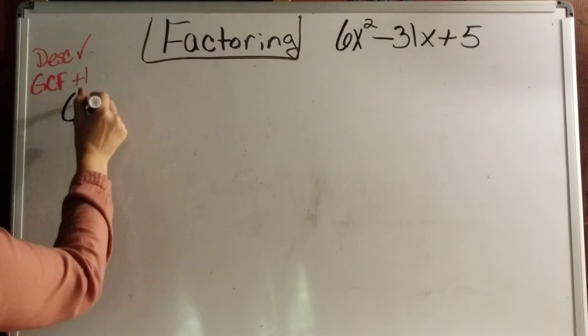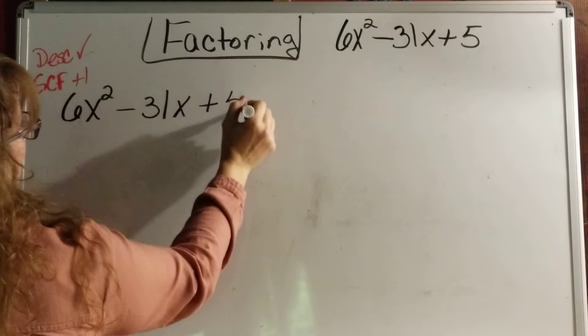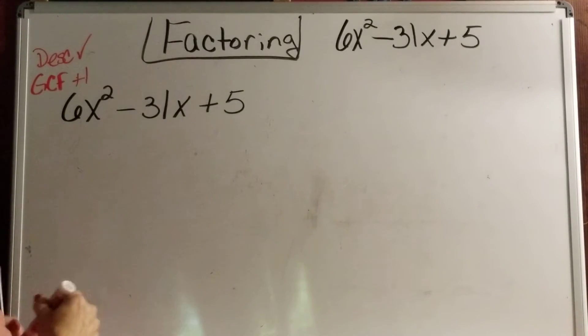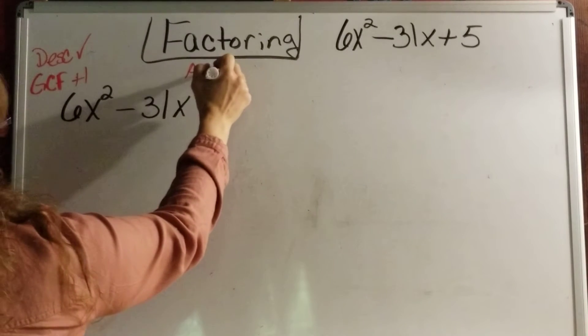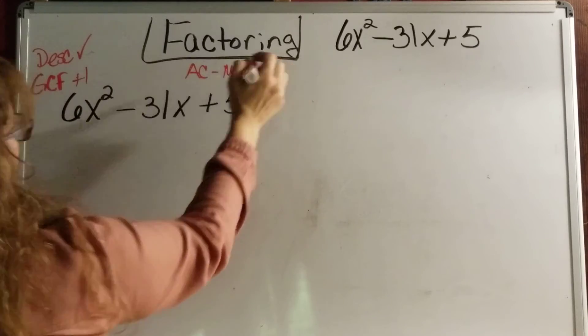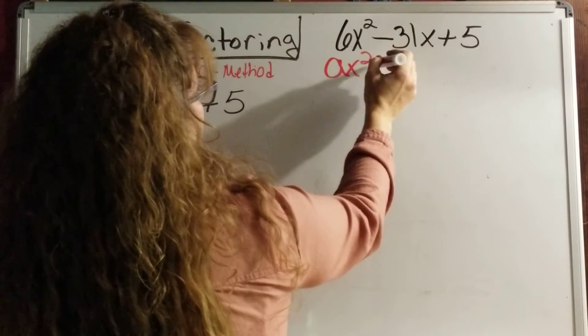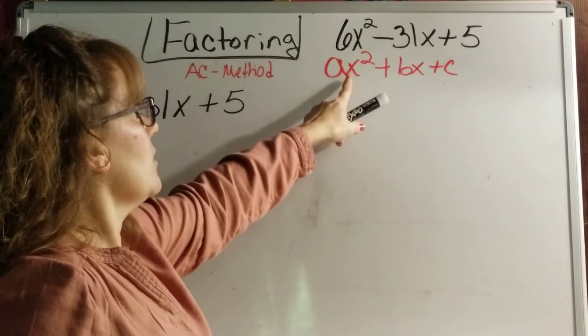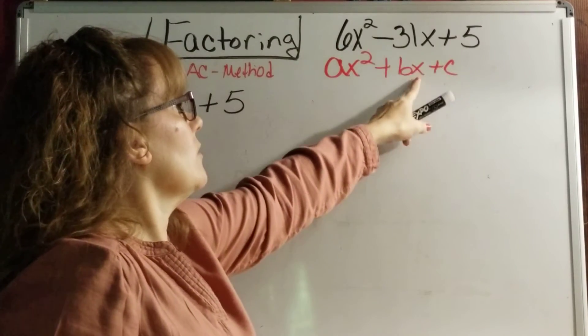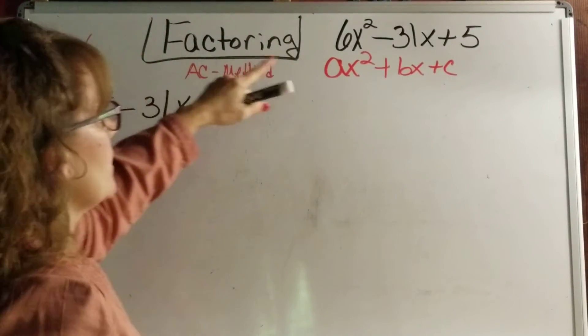I have 6x squared minus 31x plus 5. And let's read this. This says, and I'm going to write it in sentence form. So we're going to do AC method. Well, what is AC method? Remember, a while ago, I had it written like this. A is the coefficient on x squared. B is the coefficient on x to the first power. And C is my constant.